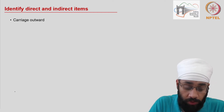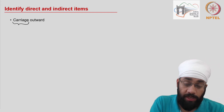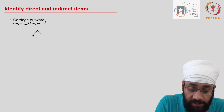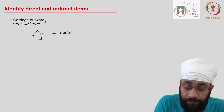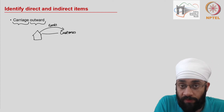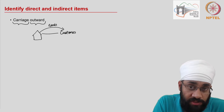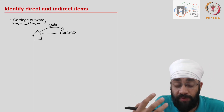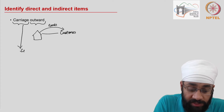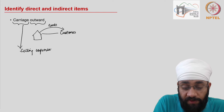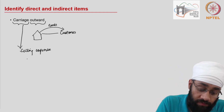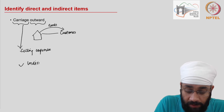The next item is carriage outward. Carriage is the transportation expense, and 'outward' refers to the direction of the goods — goods going out of the business when sold to customers. You pay the shipping charges as part of a free delivery policy. Carriage outward is a selling expense because offering free delivery encourages more sales. Since this is not related to manufacturing the goods, we categorize it as an indirect expense.